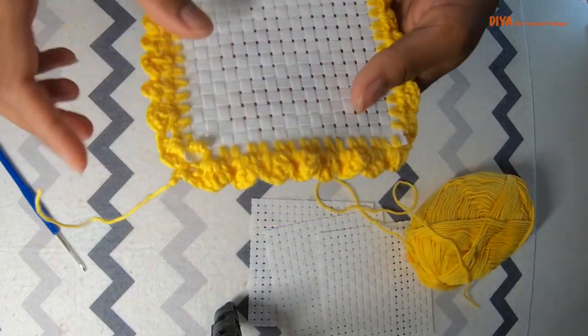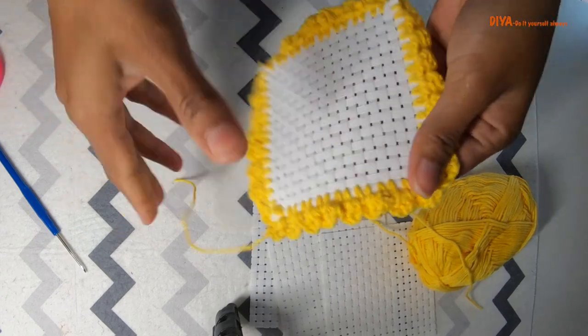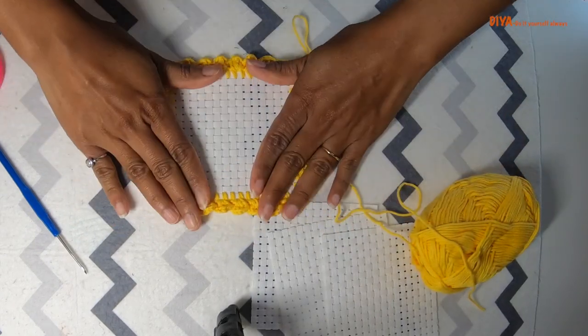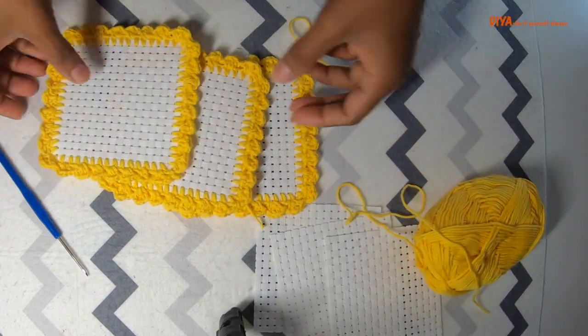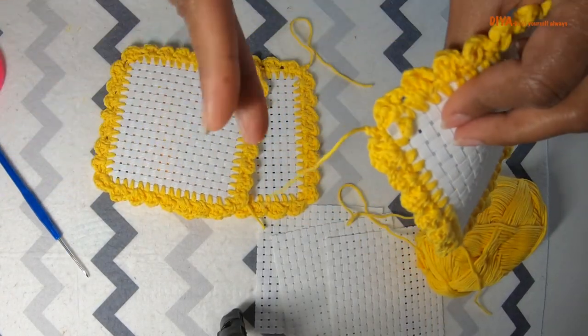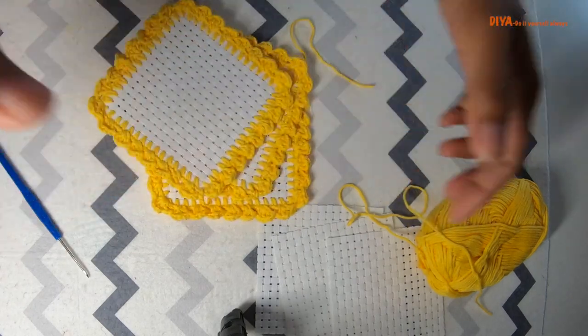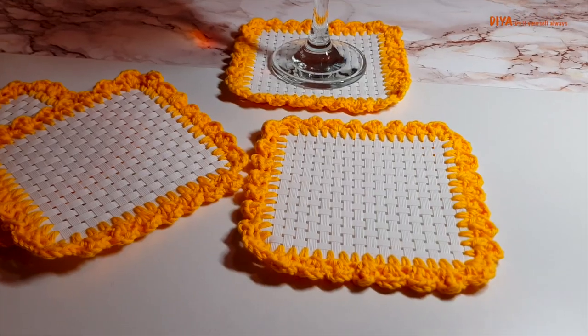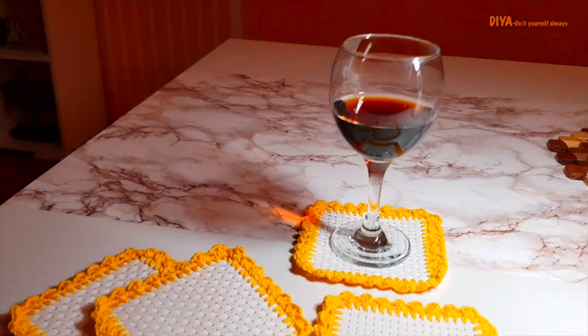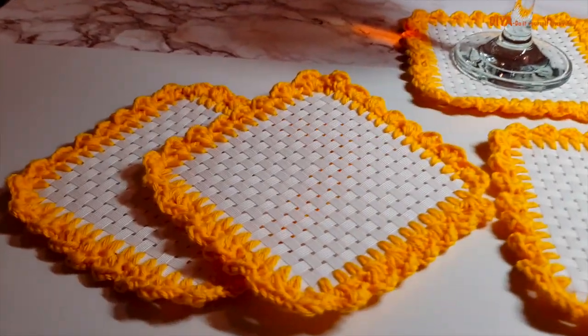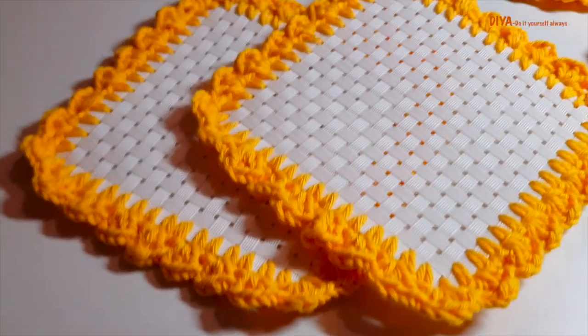So this is how these coasters will look like. These are washable coasters and look really pretty. You can make a great gift set out of this. This simple coaster can be made by crochet beginners, because as I have already said, I am also a beginner. I'm not a crochet master. If I can make this then you can surely make this.